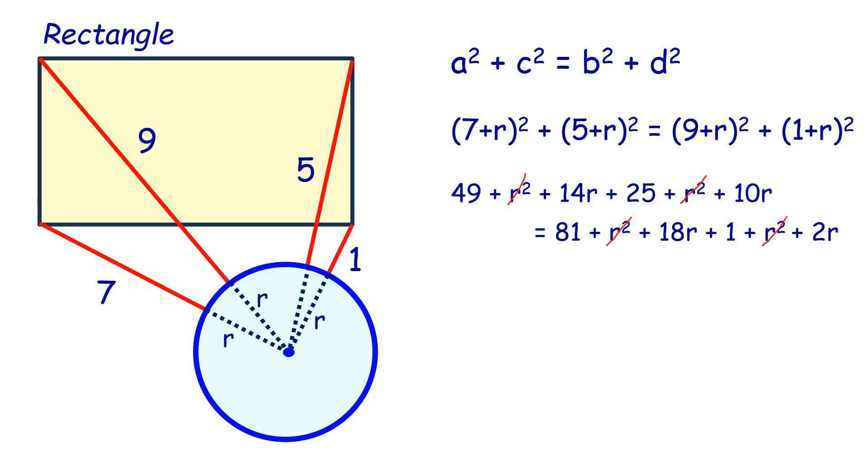Taking the terms with variable r on one side and the constants on the other side, we get 4r = 8, or r = 2 centimeters.